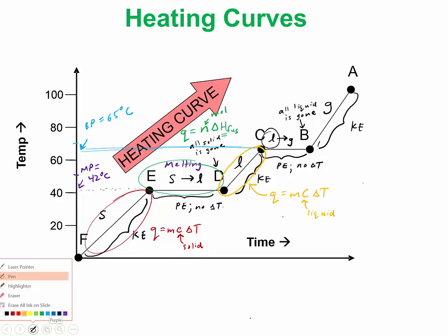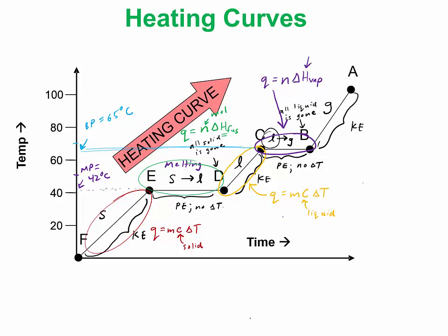From C to B, this is another phase change, so there's no delta T. We're going to have to use Q equals N delta H vaporization. These values you could find from a book somewhere or go online and look it up.